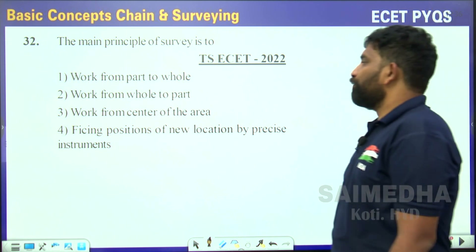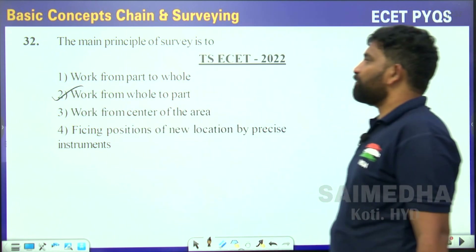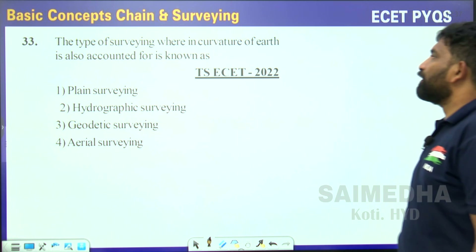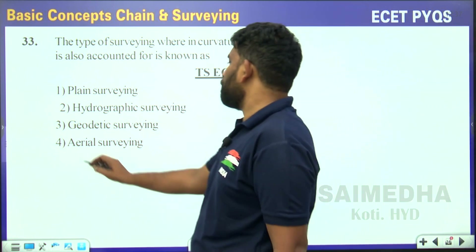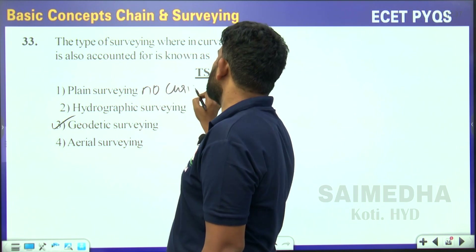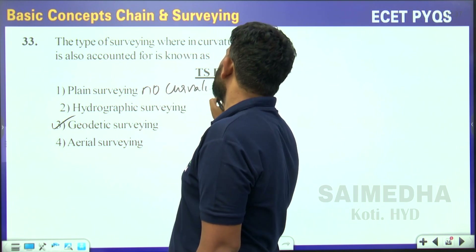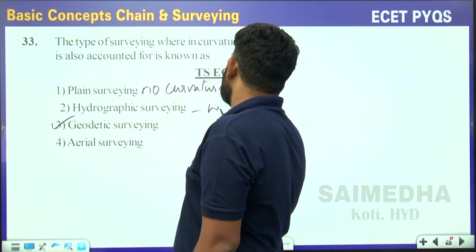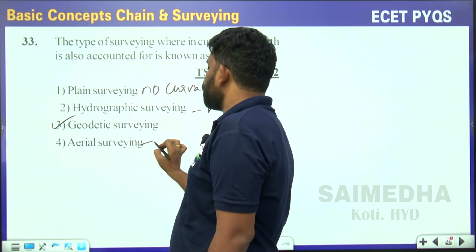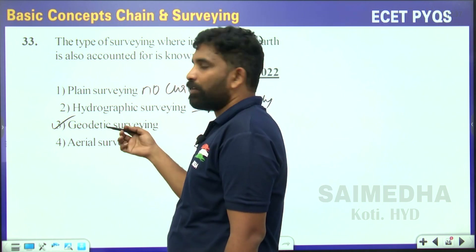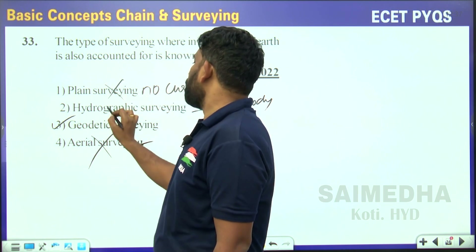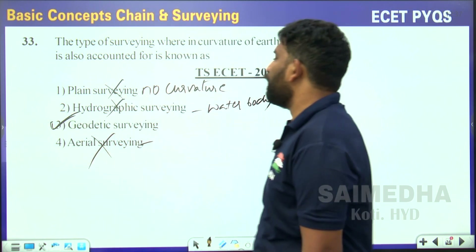The principle of surveying is to work from whole to part. The type of survey where the curvature of the earth has to be accounted for is geodetic surveying, because in plane surveying no curvature is considered. Hydrographic surveying relates to water bodies. So the correct answer is geodetic surveying.